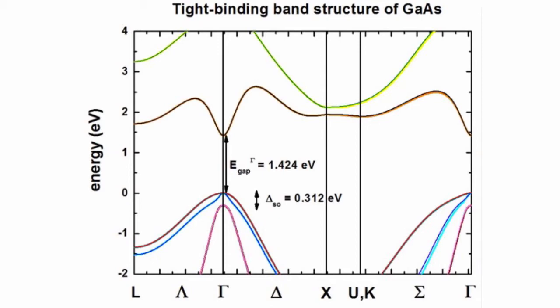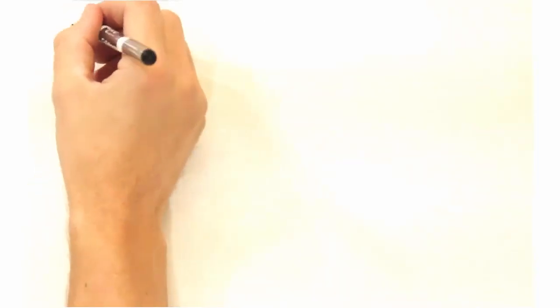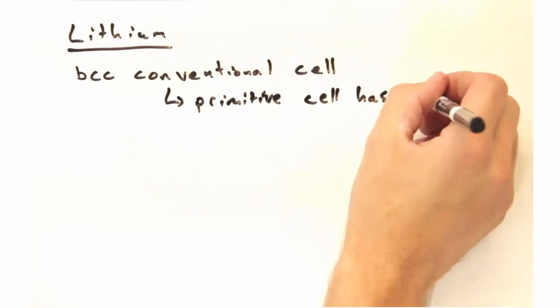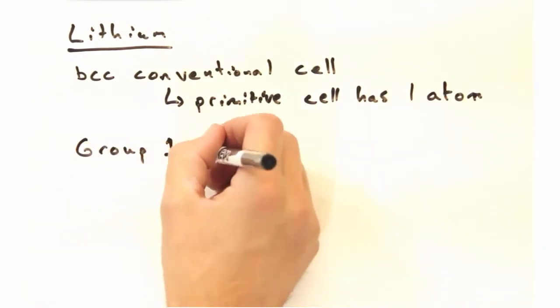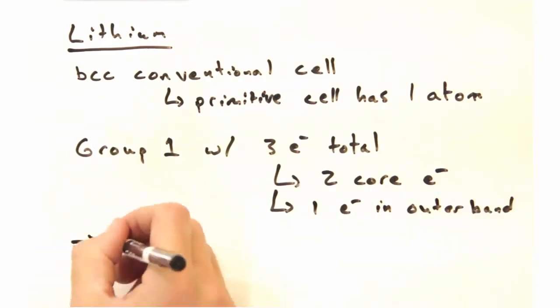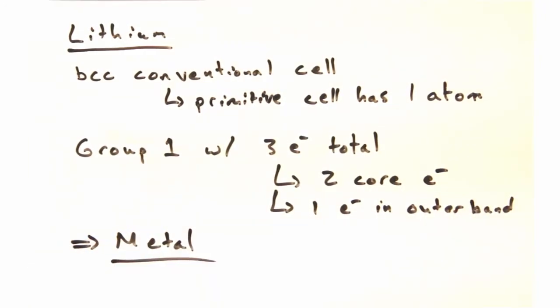Predicting this for gallium arsenide isn't so terrible, since we think of it as a diamond-like semiconductor with sp3 bonding. Let's move on to lithium. Okay, well that's easy. I know lithium is group one and has a total of three electrons. Because two of them are core states, the valence band is half-filled, so I'd guess a metal.